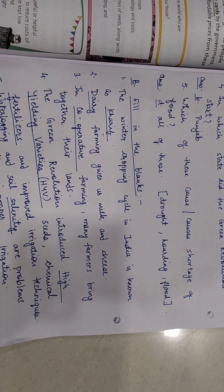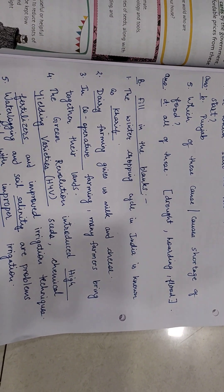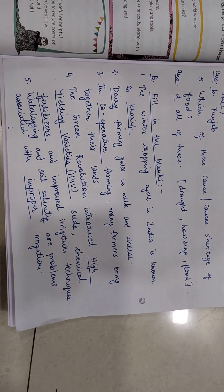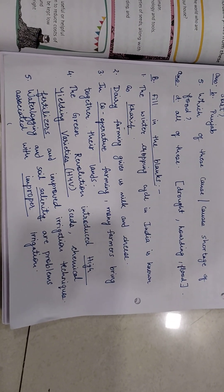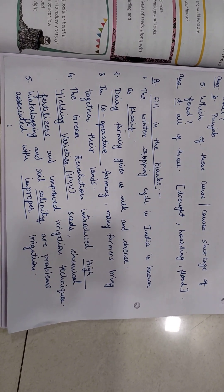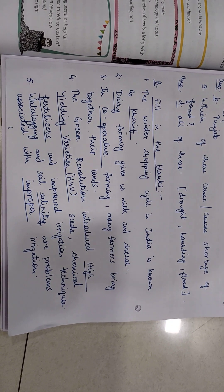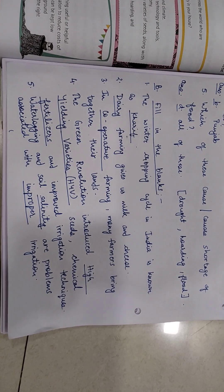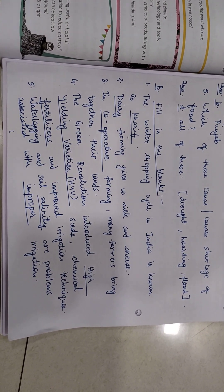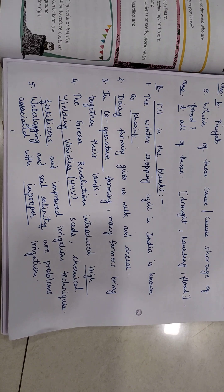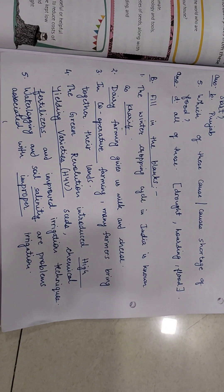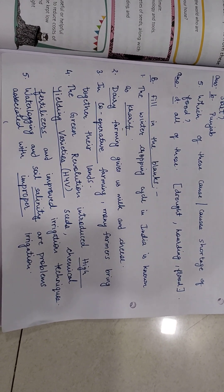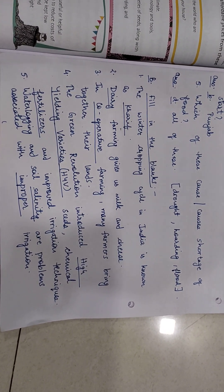Third: in cooperative farming many farmers bring together their lands — answer is cooperative. Fourth: the Green Revolution introduced high yielding varieties, HYV seeds, chemical fertilizers, and improved irrigation techniques. The answers are high yielding varieties and chemical fertilizers.